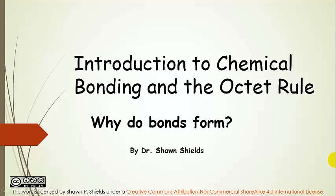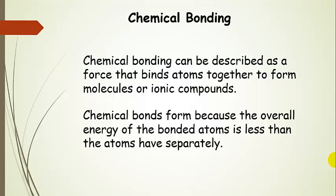Introduction to chemical bonding and the octet rule. The question we're going to answer here is why do bonds form? Chemical bonding can be described as a force that binds atoms together to form molecules or ionic compounds. What we're going to find out in this unit is why bonds form. The bottom line is that chemical bonds form because the overall energy of bonded atoms is less than the energy atoms have separately.